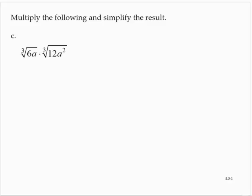The cube root of 6a times the cube root of 12a square. All right, same idea. Since they're both cube roots, I can write this as a cube root of 6a times 12a square. So that's the cube root of 72a to the third.